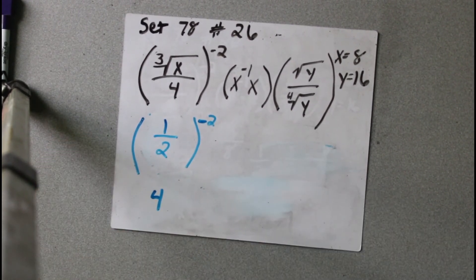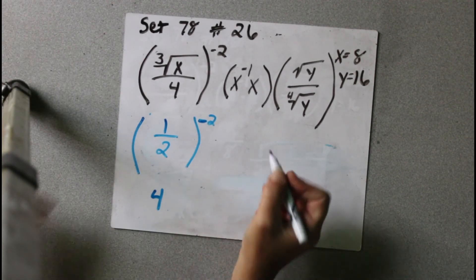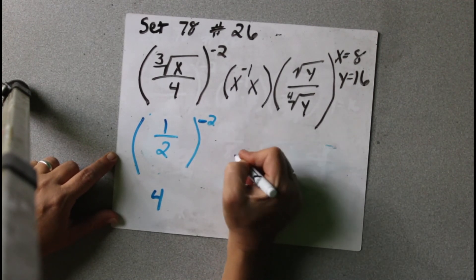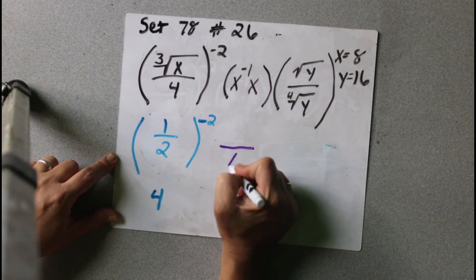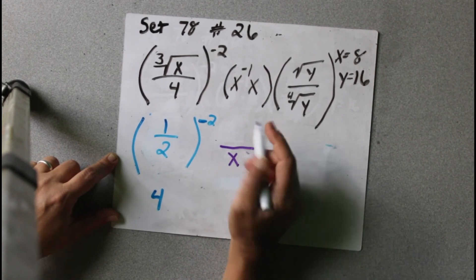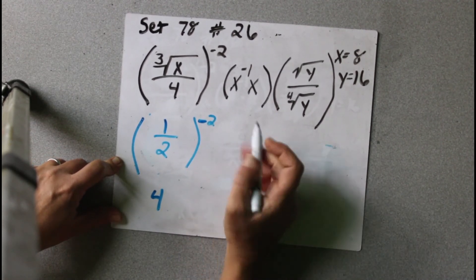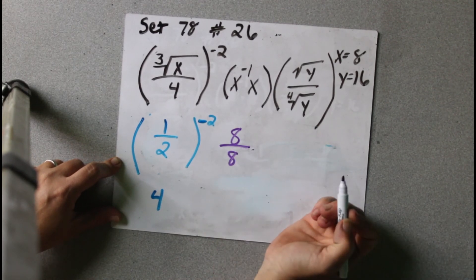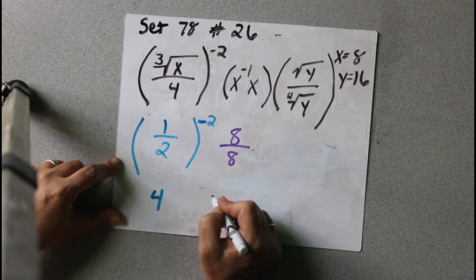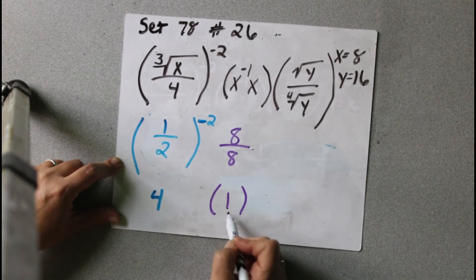Now this second part — to get rid of the negative on x, we're going to move it to the bottom of the fraction. So x to the 1, or just x, would be at the bottom, and x would be at the top. And x equals 8. So it would be 8 over 8. And 8 divided by 8 is just 1. So that whole part simplifies to 1.